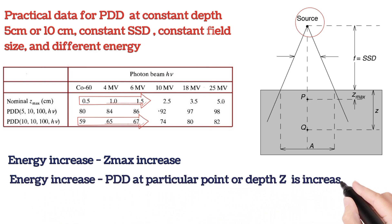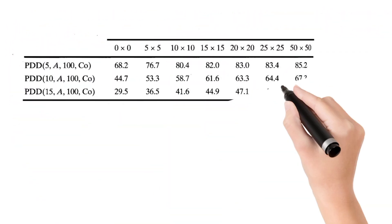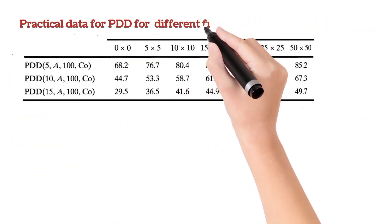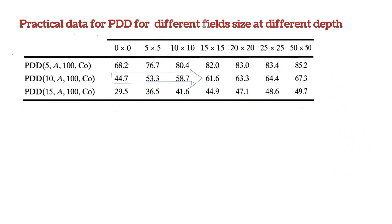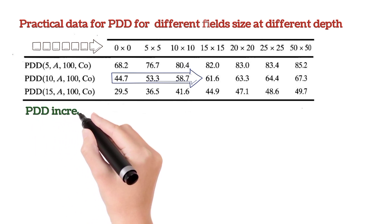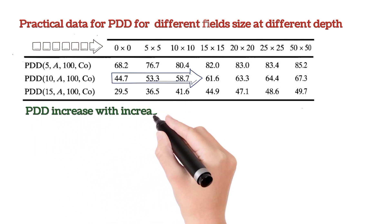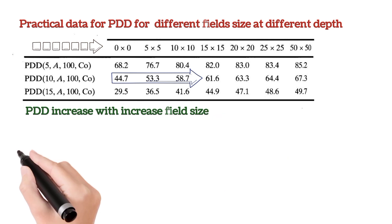This is the practical measured data for PDD for different field sizes. It shows that at constant depth, fixed SSD, and beam energy, PDD increases when field size increases. PDD is directly proportional to field size, meaning PDD increases with field size.